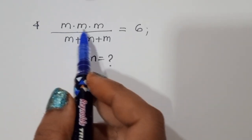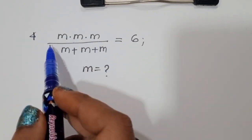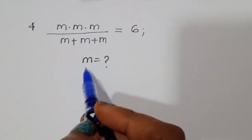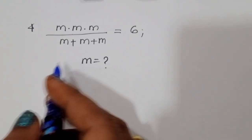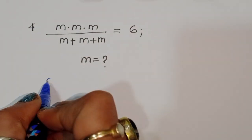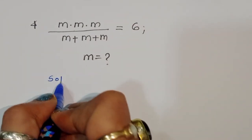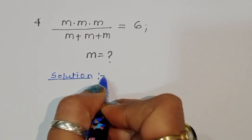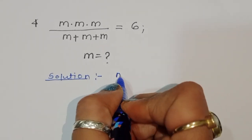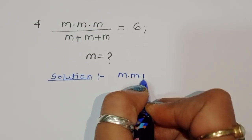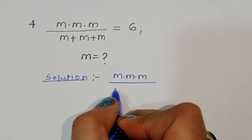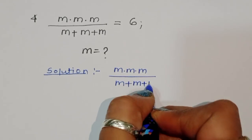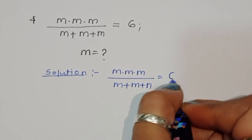The question is: m times m times m, divided by m plus m plus m, is equal to 6. We have to find out the value of m in this question.